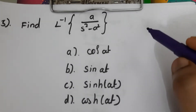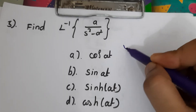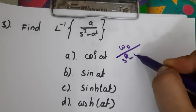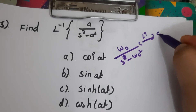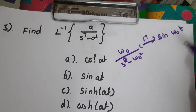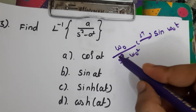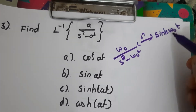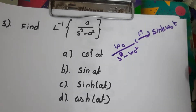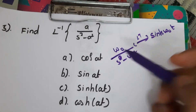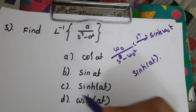Fifth question: find the inverse Laplace transform of a/(s² - a²). Recall the formula: ω₀/(s² - ω₀²) corresponds to sinh(ω₀t). Here ω₀ = a, so the answer is sinh(at). The answer is C.